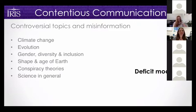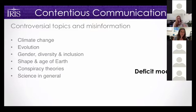As scientists, we often operate from what's called the deficit model — the idea that if we just get the information out there, people will make decisions based on evidence and facts. But a lot of social science research is showing that's just not the case.